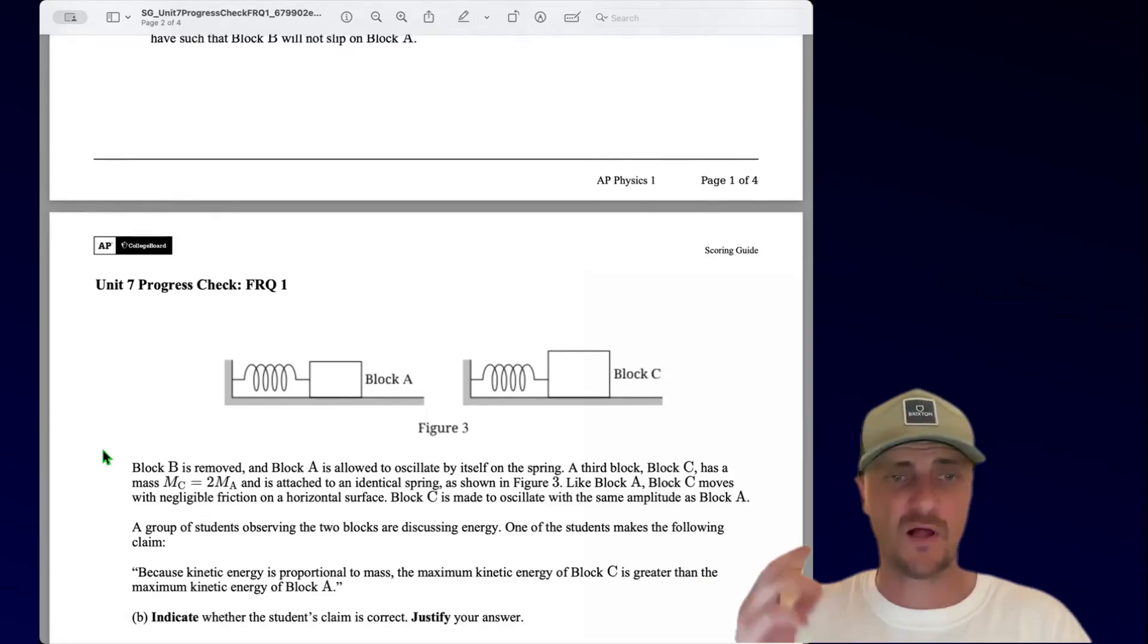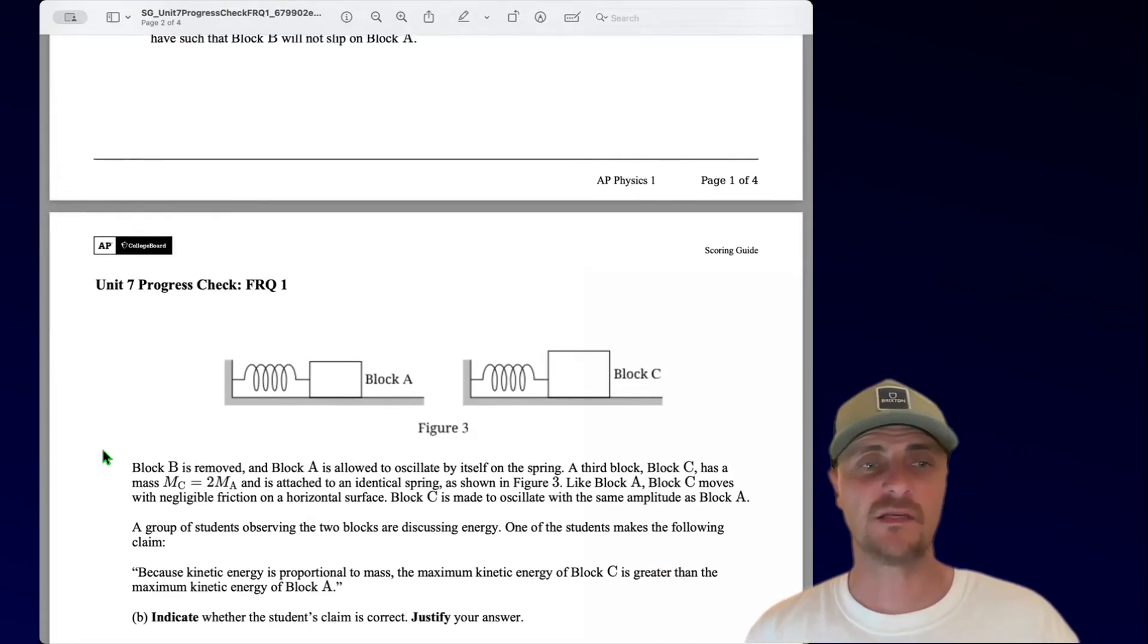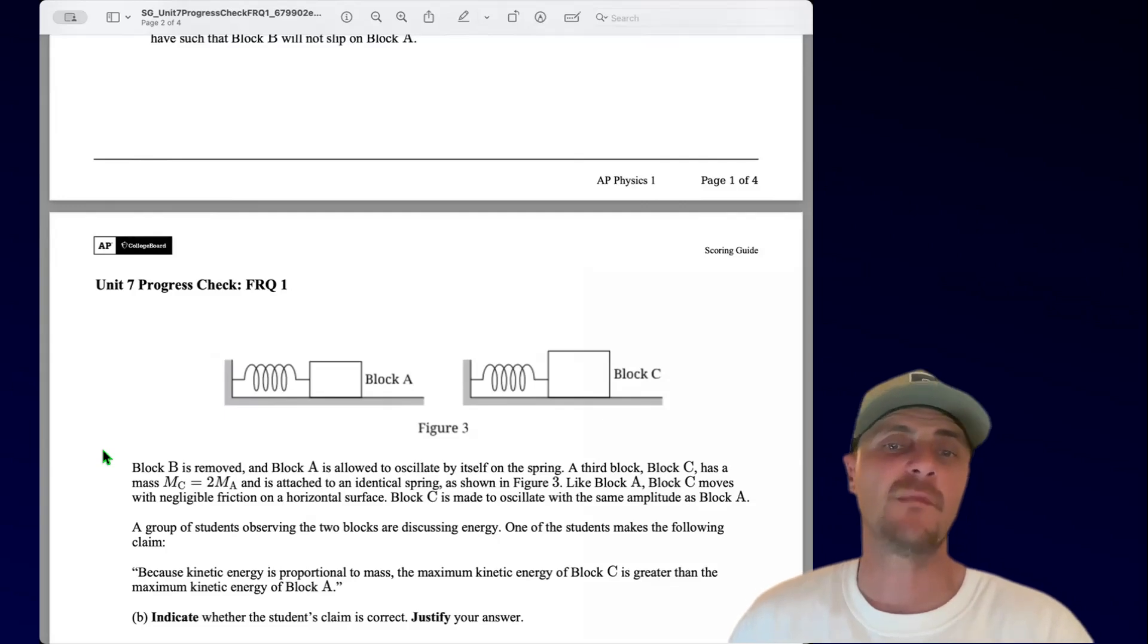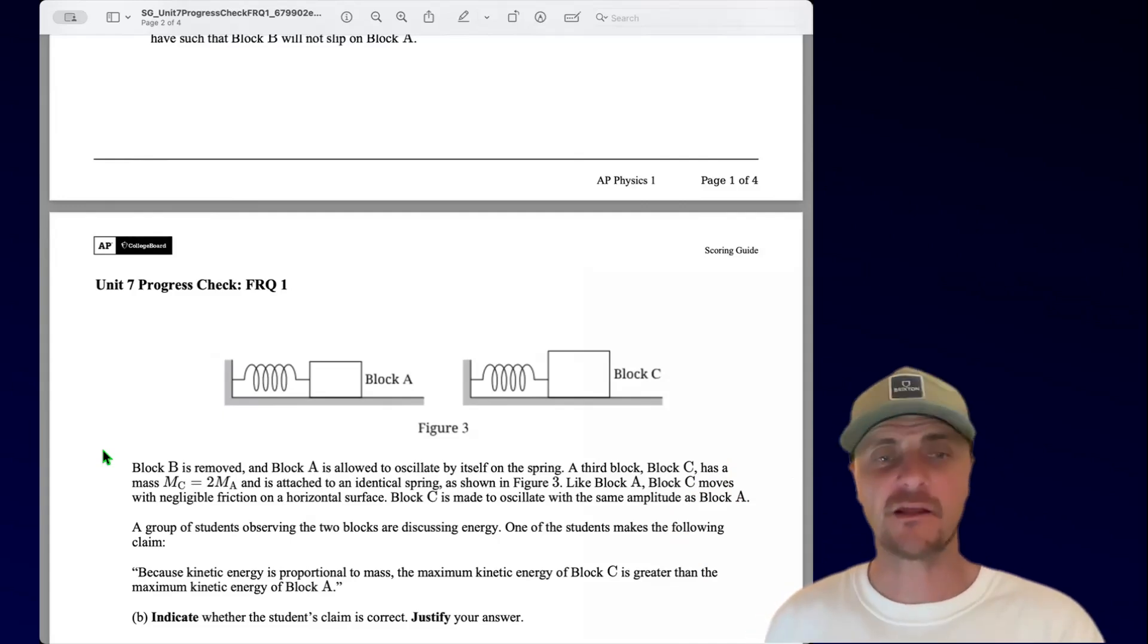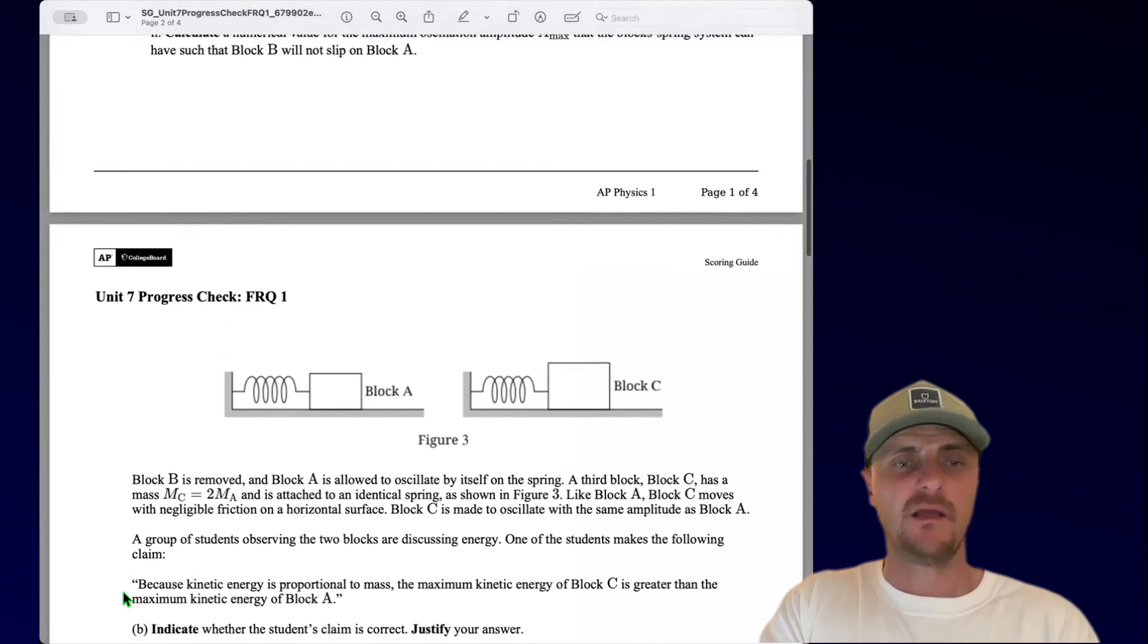Okay, let's move on to part B. All right, block B is removed and block A is allowed to oscillate by itself on the spring. A third block, block C, has a mass m_C equals 2m_A and is attached to an identical spring as shown in figure 3. Like block A, block C moves with negligible friction on a horizontal surface. Block C is made to oscillate with the same amplitude as block A. A group of students observing the two blocks are discussing energy. One of the students makes the following claim. Because kinetic energy is proportional to mass, the maximum kinetic energy of block C is greater than the maximum kinetic energy of block A. Part B. Indicate whether the student's claim is correct. Justify your answer.